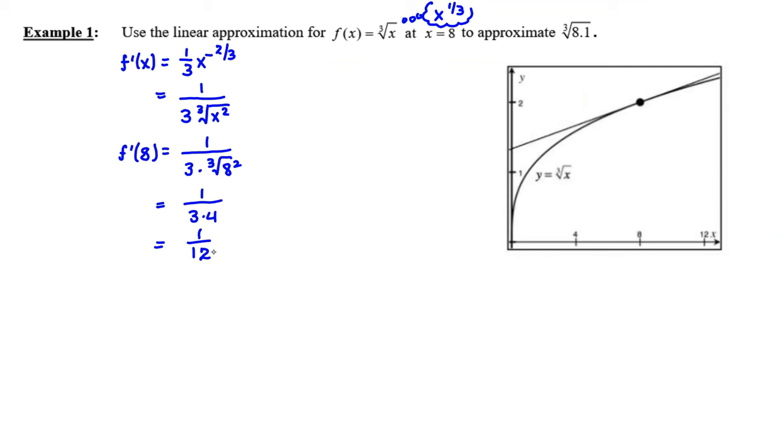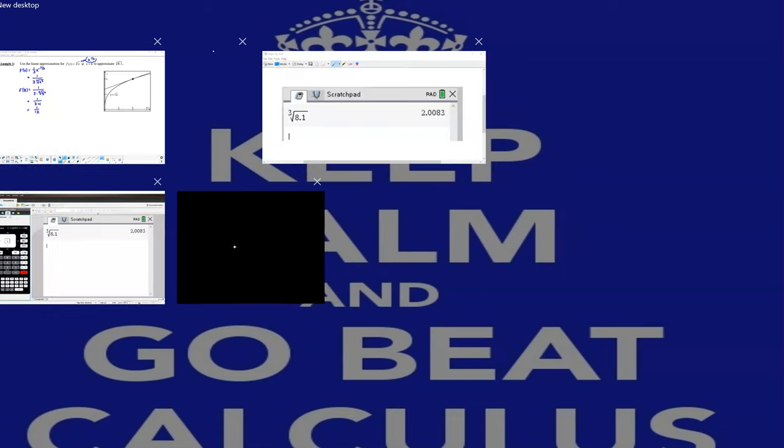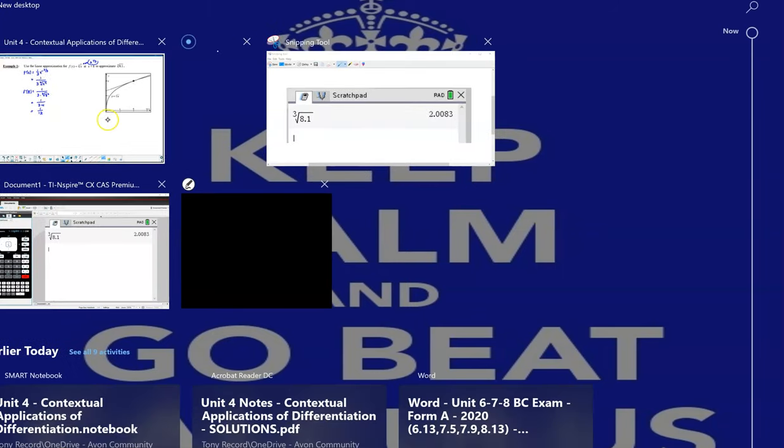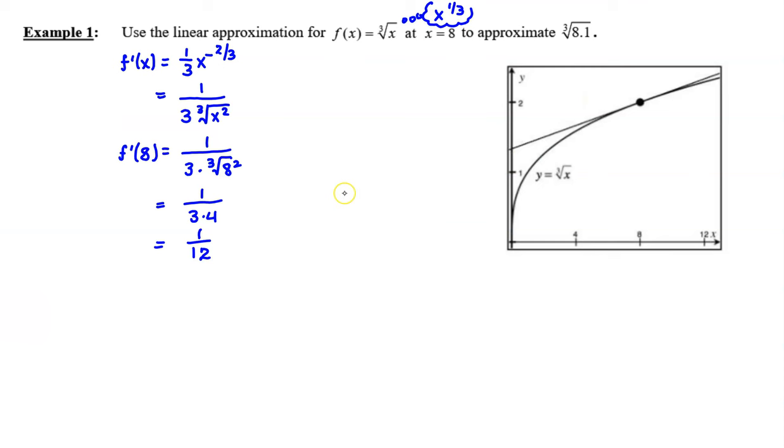Now we're not quite ready to write the equation of our tangent line. Whenever you're whipping up a really good tangent line dish, you need two ingredients: you need the slope—check—and you need the point. We have half of the point. f(8) is going to be what I can use to find that y-value of the point. So I'm going to say cube root of 8, which is 2, and I'm all set to go here.